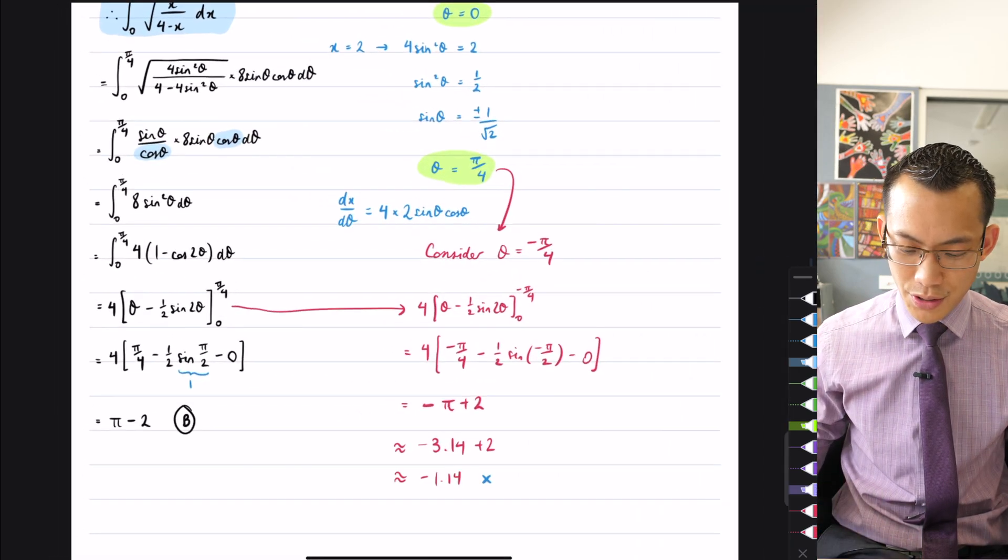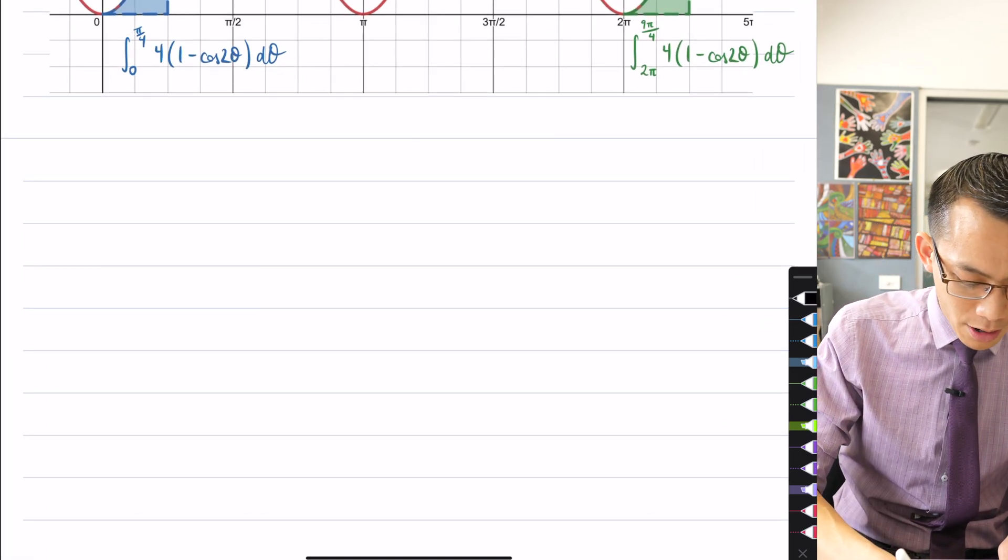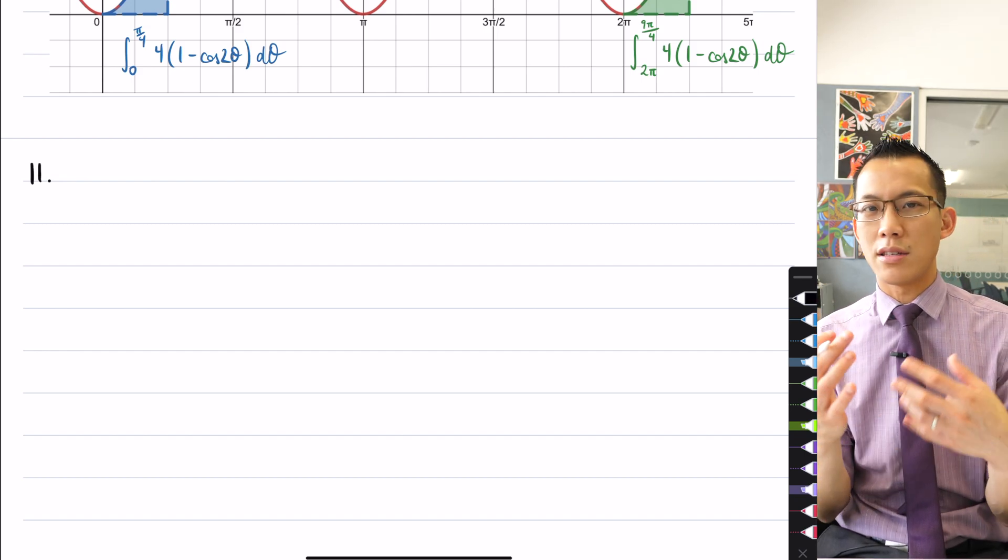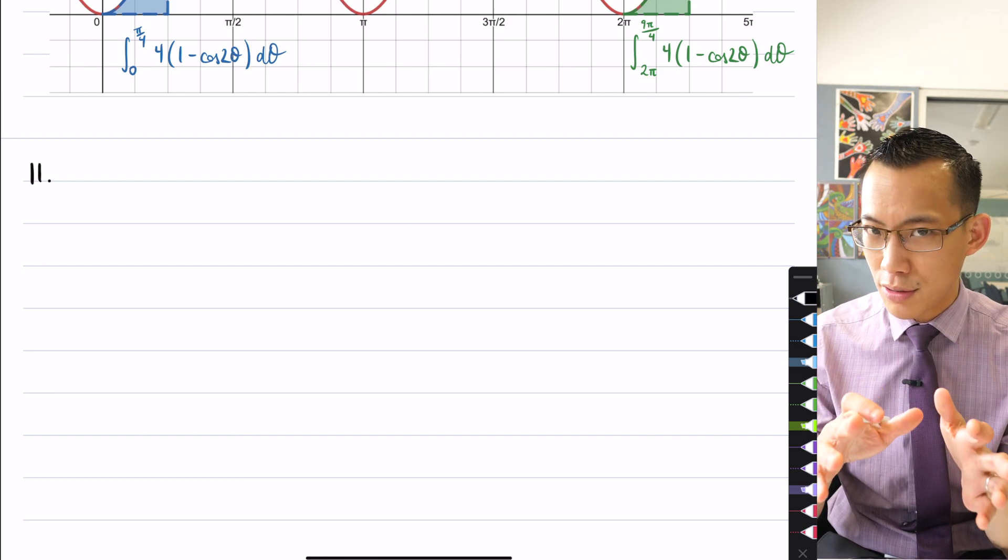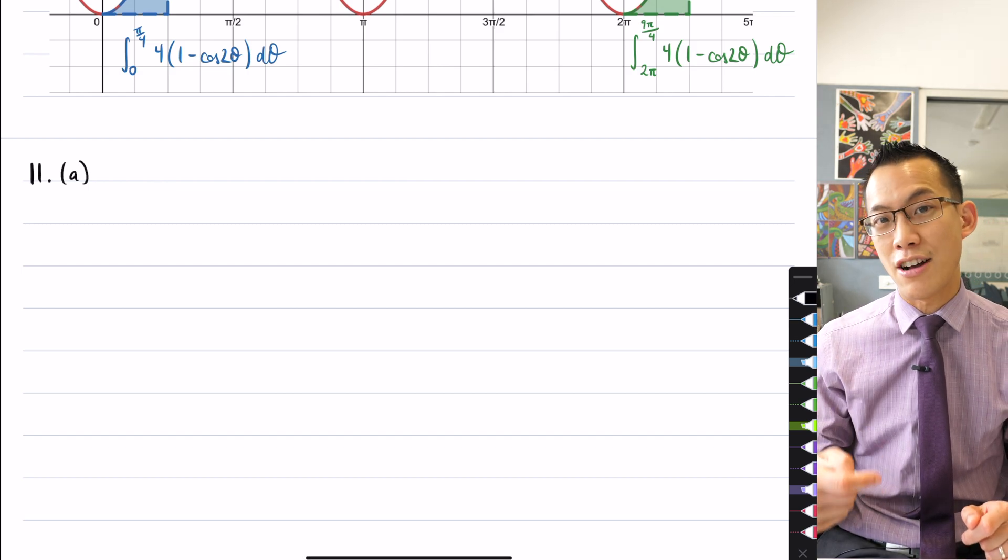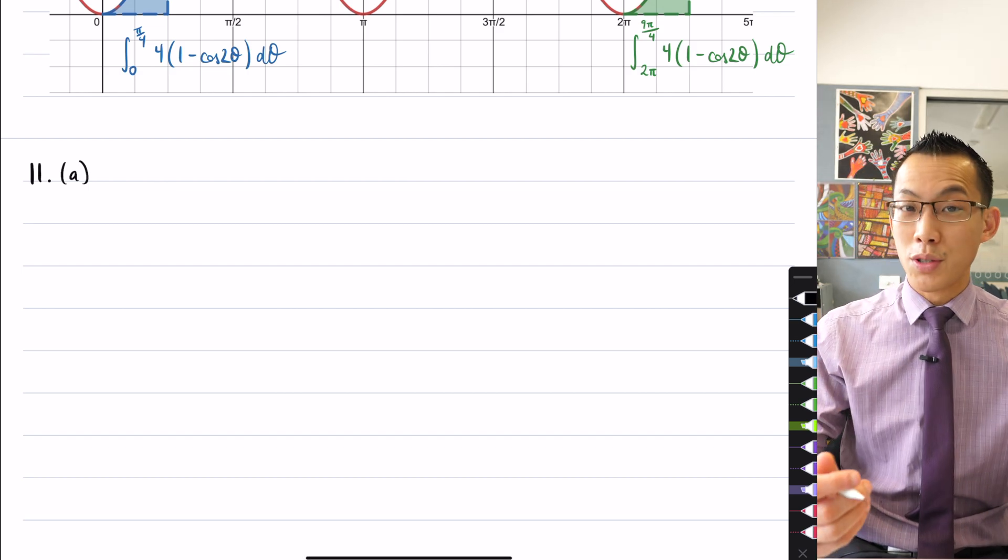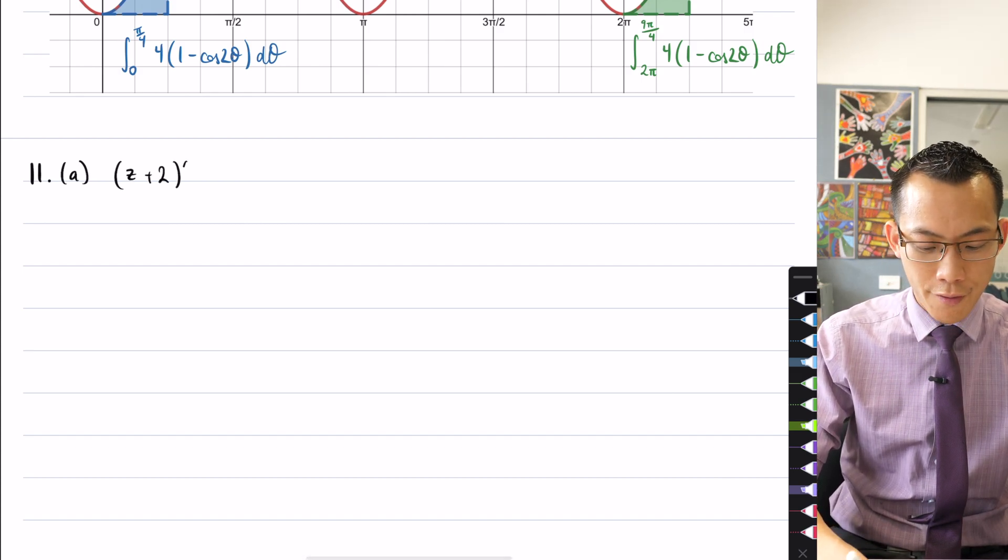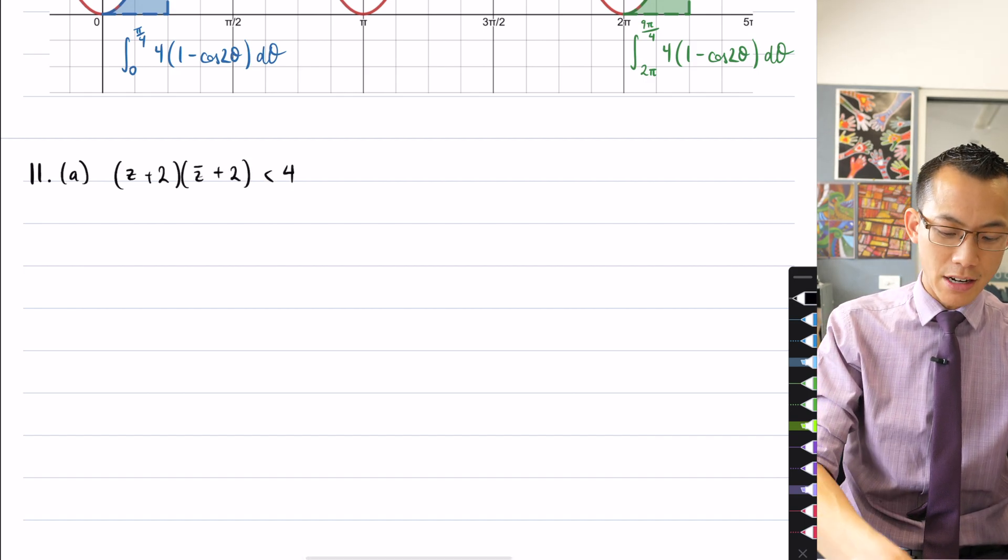So what do we do with this question? Well, I really like this question because it pulls out, or rather it combines our understanding of complex numbers as algebraic objects and simultaneously as geometric objects. We'll start just by stating the particular inequality that they want us to graph. What subset of the complex plane will satisfy this particular inequality?